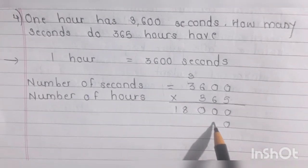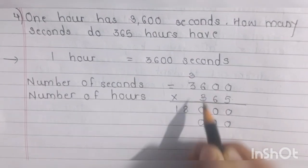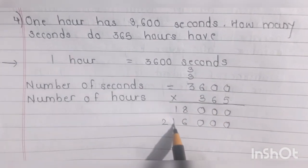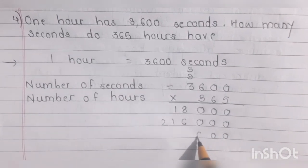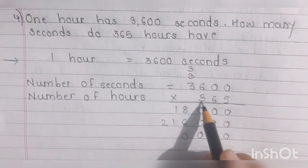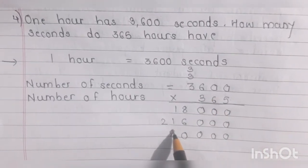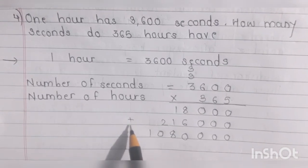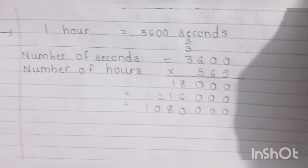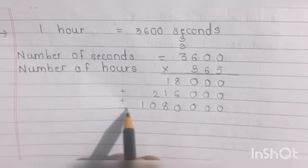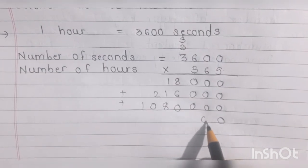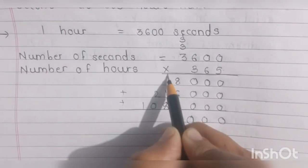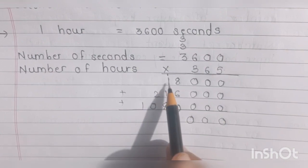We will put one zero. 6×6=36, carry 3. 6×3=18, 18+3=21. Then 3×3=9, 9+1=10. Your next step will be addition: 0, 0, 0, 0, 0, 8+6=14, carry 1. 8+1=9, 9+1=10, plus 1=11.